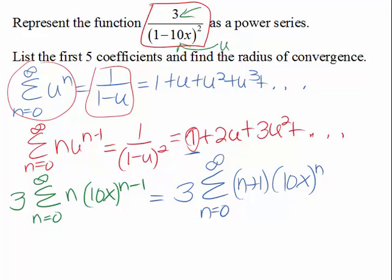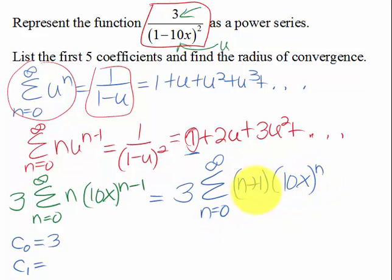And now we can figure out our coefficients, and we can also figure out our radius of convergence. So basically if we put in 0, we get out of this a 1, and then we've got to multiply it by that 3. So our C0 is 3. C1, if we put in a 1, we have 2 here. Times 10 is 20. Times 3 is 60.